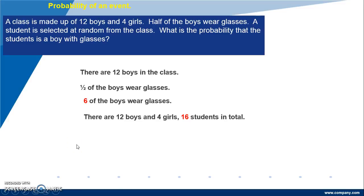The probability that we select a boy with glasses is 6 over 16 or 3 over 8 in simplest form. Thank you.